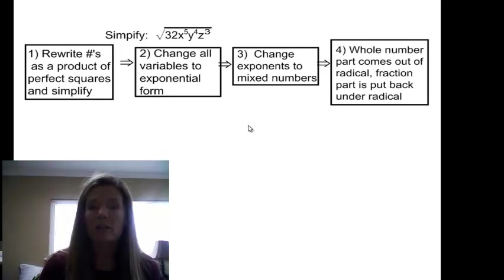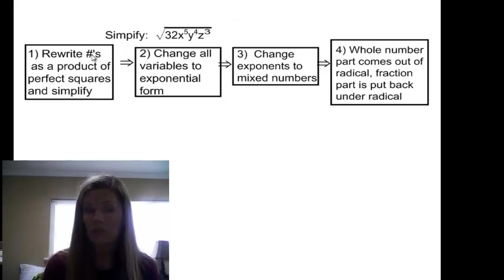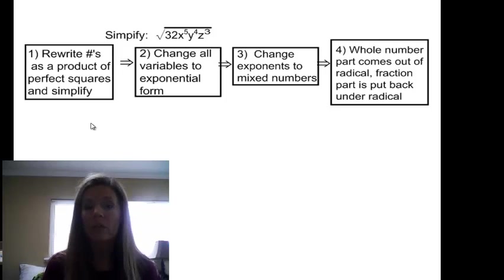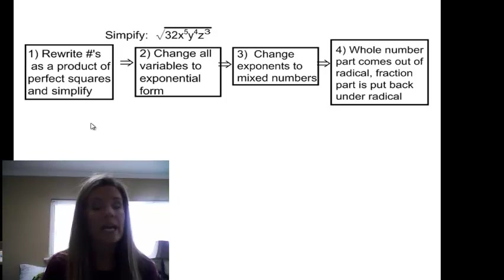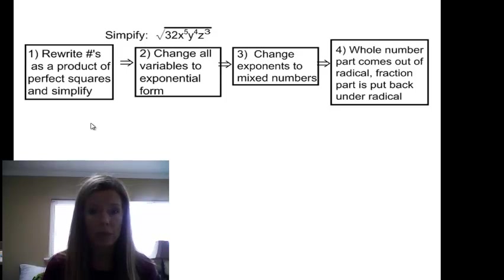When we simplify radicals, we're going to start with an expression that has both a number and variables underneath the radical. For the first method, here are the steps: first, rewrite the numbers as a product of perfect squares and simplify. Then change all variables to exponential form. Next, change exponents to mixed numbers. The whole number part of those mixed numbers stays outside the radical, while the fraction part goes back under the radical.